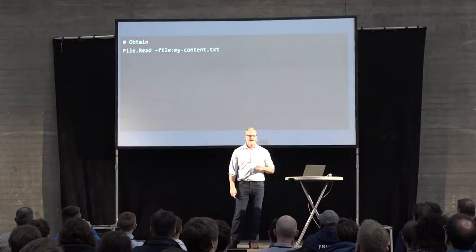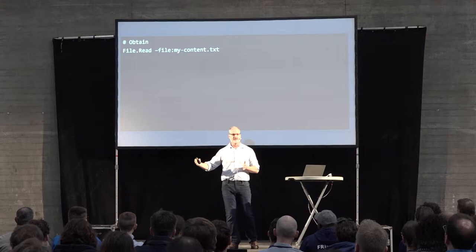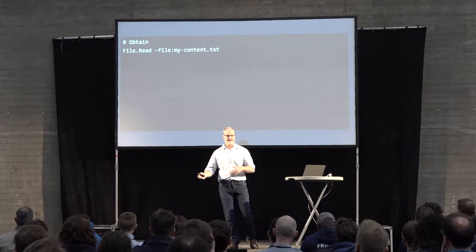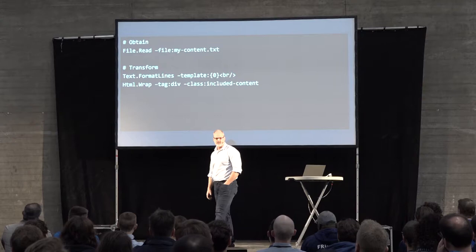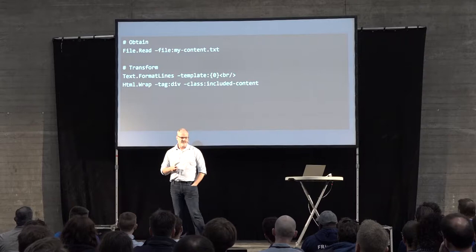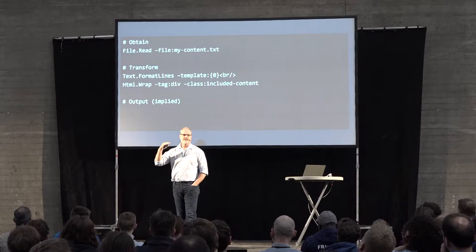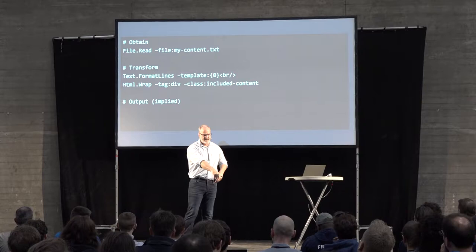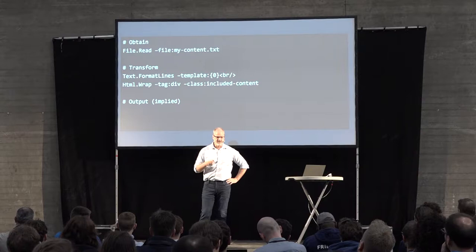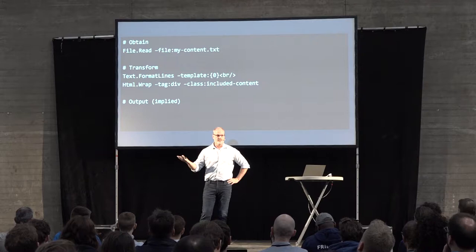It's built on the concept of commands. In this case, we have a command called file.read — we're reading a file called mycontent.txt off the file system. You can sandbox this to a particular directory so editors can't read your web.config. Then we transform it with text.formatLines, adding a line break to the end of each line. Then HTML.wrap wraps it in a div tag with a class on it. Output is always implied — whatever comes out of the last step goes out.